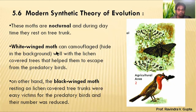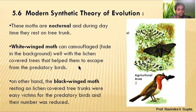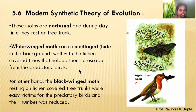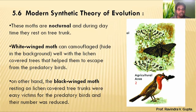White-winged moths can camouflage and hide in the background with the lichen-covered tree, which helps them escape from predatory birds. Lichen is a composition of plant and fungi.